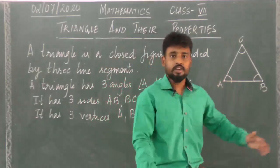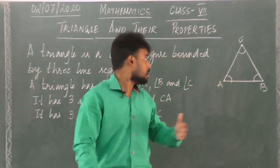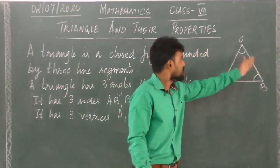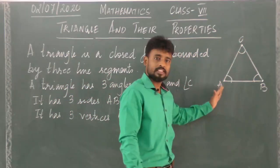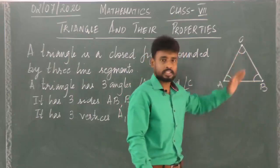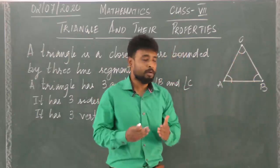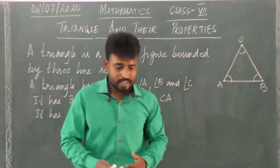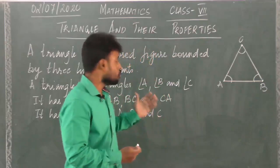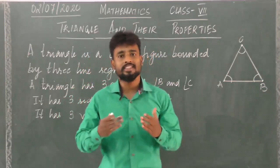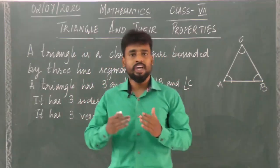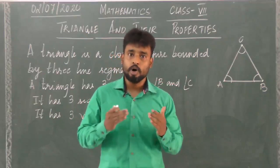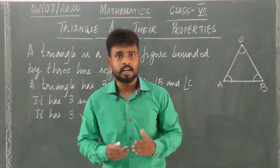So basically, once again we can see this triangle. We have these sides AB, BC, and CA. The angles are angle A, angle B, and angle C, and the vertices which are the end points are A, B, and C. Now let us come to the various types of triangles. We have understood what a triangle is. We have various types of triangles on the basis of sides and on the basis of angles.